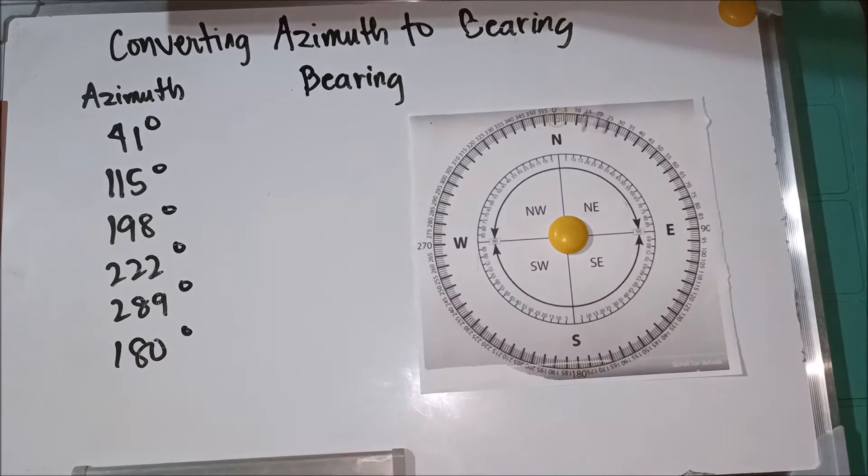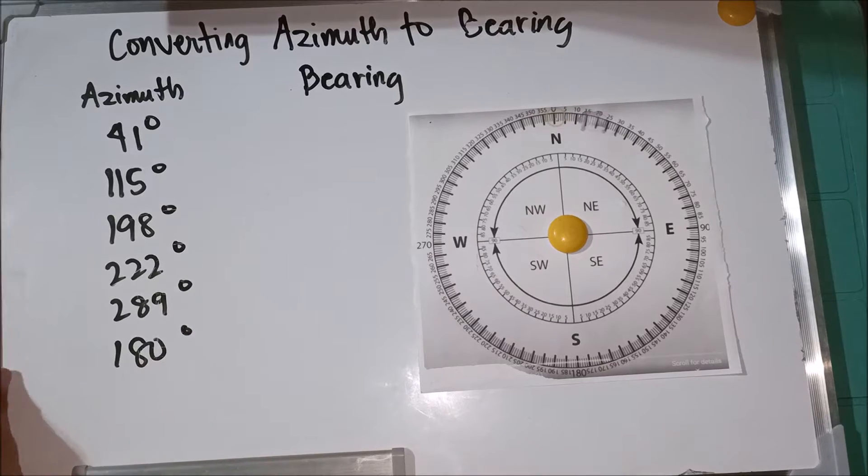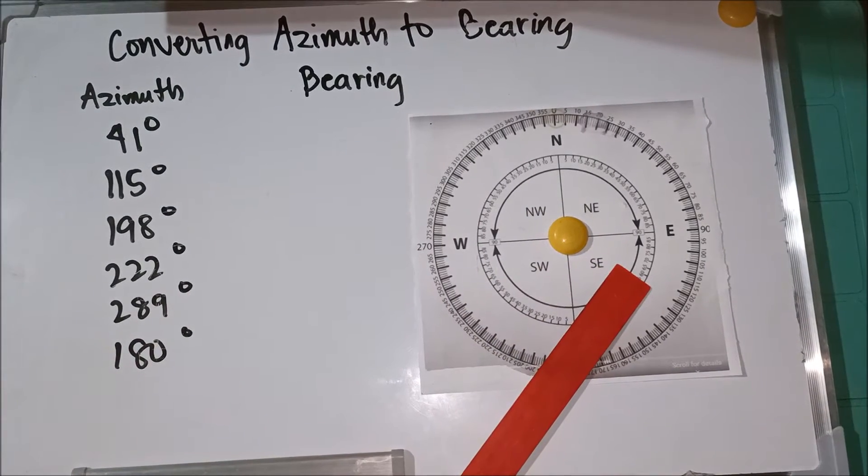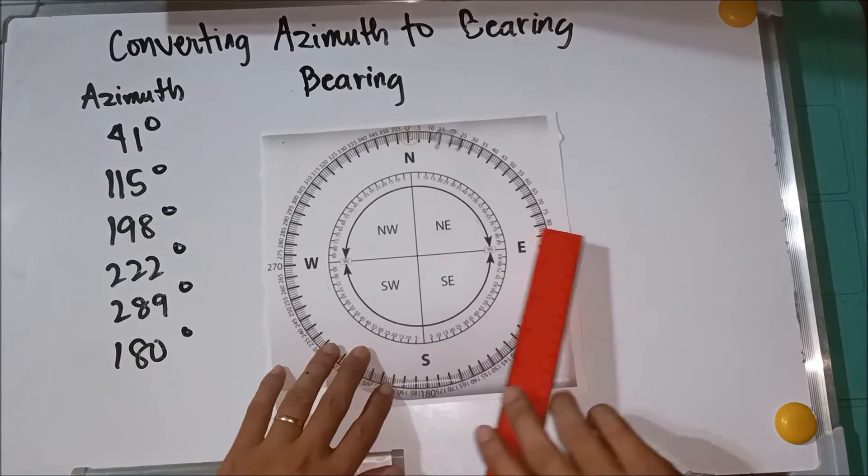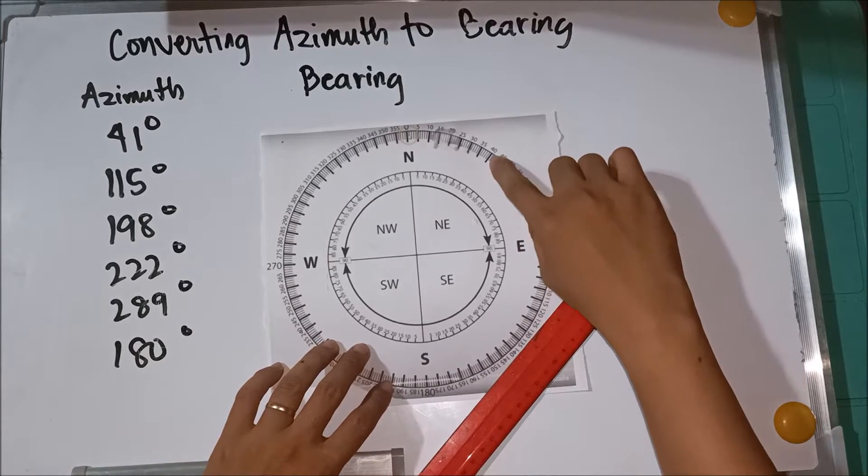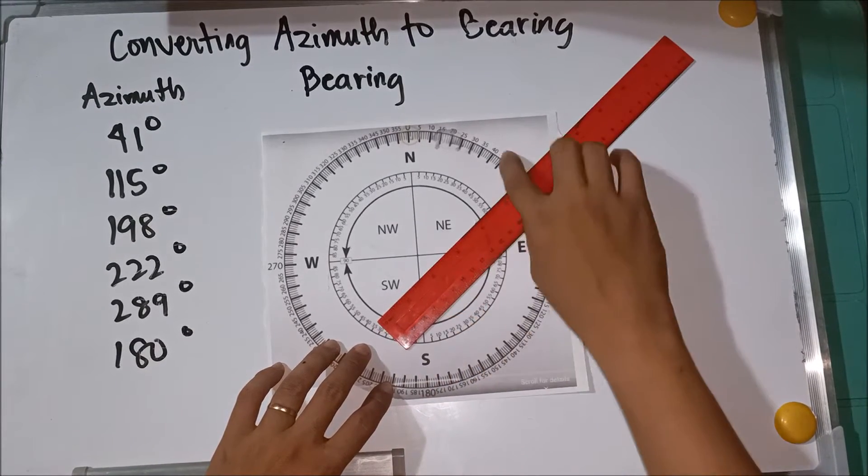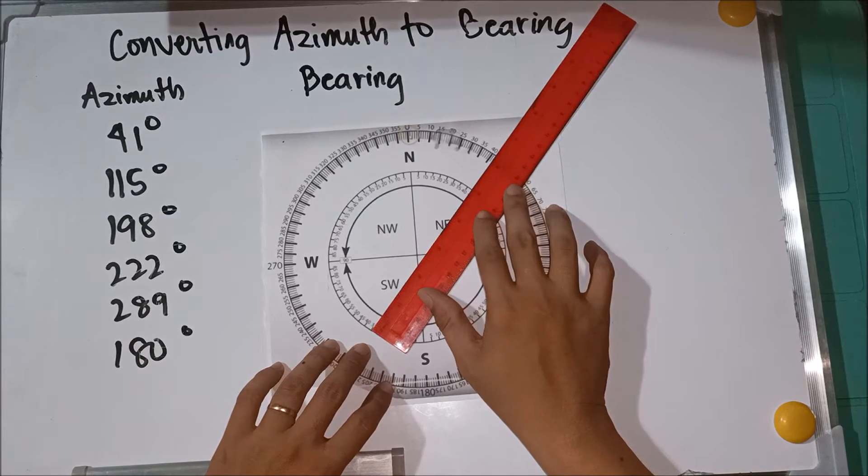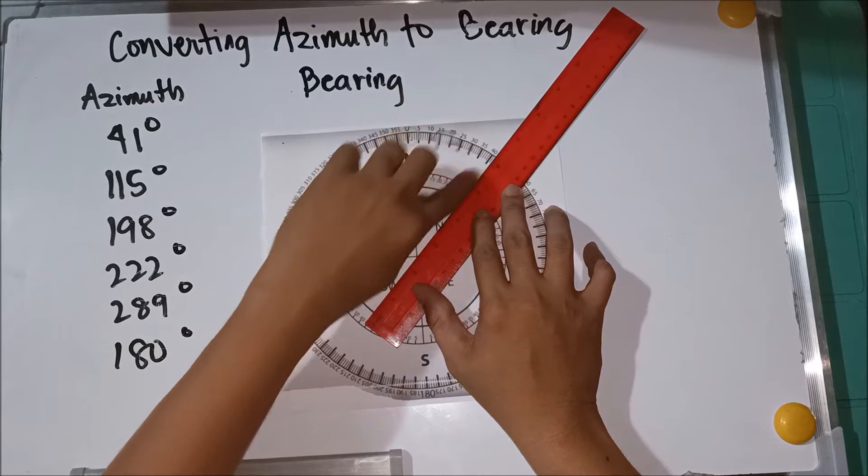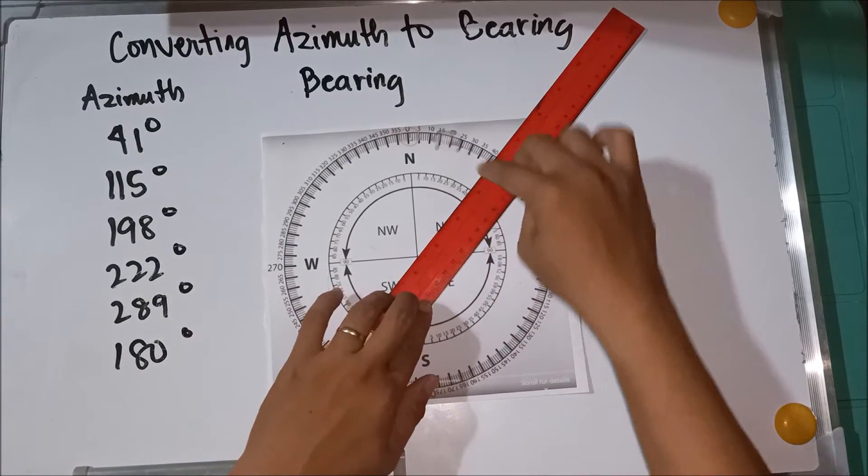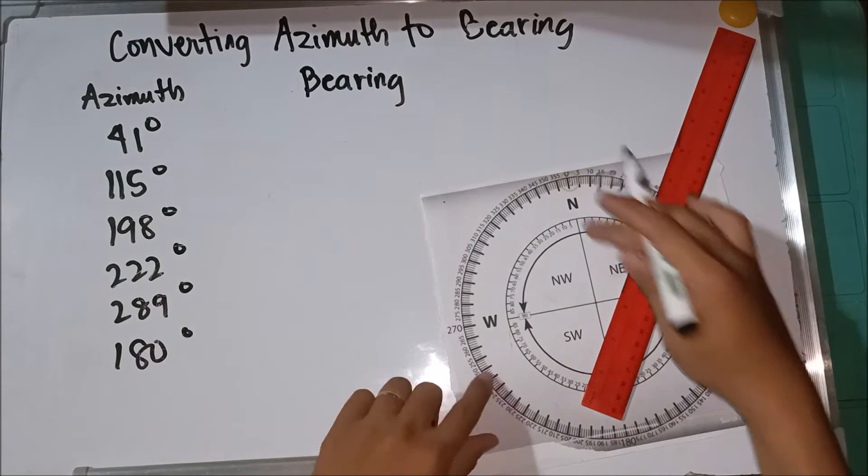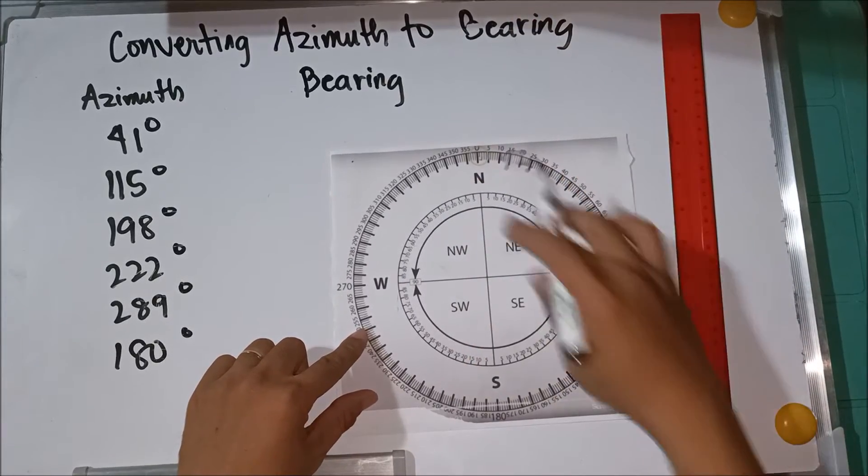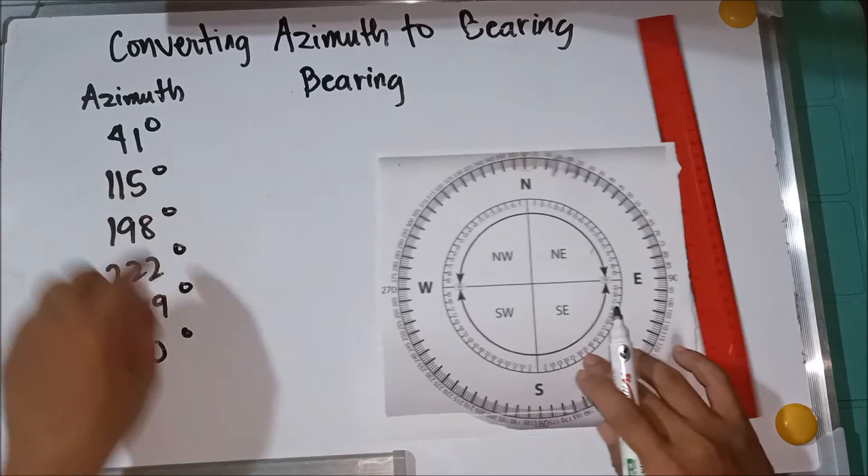Example number one: we have 41 degrees. So as we all know, 41 degrees. I'll show you another way. 41 degrees, so this is 40 degrees, a little bit more. So that is 41 degrees. That's it. From here going to there, that's 41 degrees.